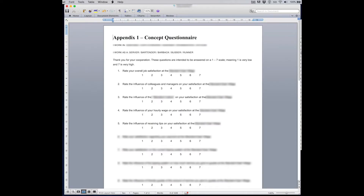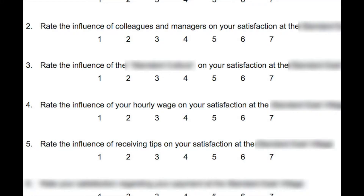Then he has a number of questions to measure how various things may be related to or influence job satisfaction, and he phrases these survey items as: 'Please rate the influence of colleagues and managers on your job satisfaction at this hotel. Please rate the influence of organizational culture on your satisfaction at this hotel. Please rate the influence of your hourly wages on your satisfaction at this hotel,' and so on. These questions are somewhat problematic — they violate the principle of measuring the variables and calculating the effect, because they are directly trying to measure the influence or the relationship between variables.